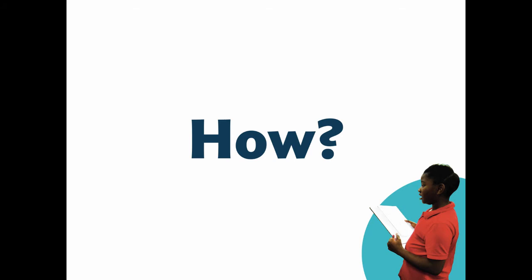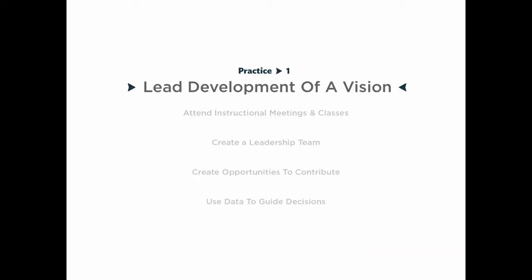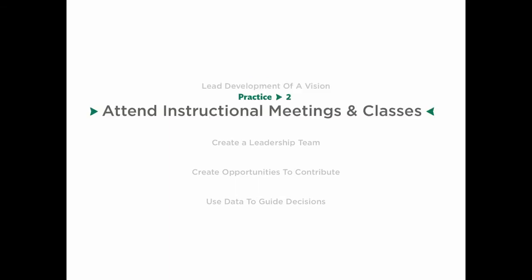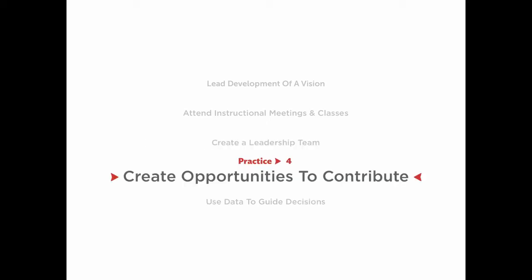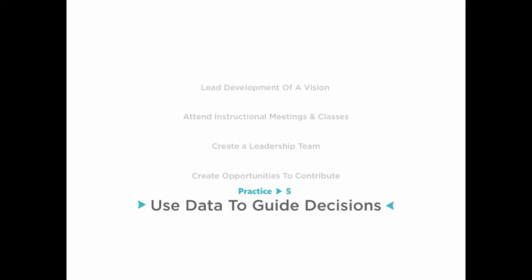So, how are we going to create or strengthen our site leadership? Let's unpack these five practices that are recommended to get started. The five practices related to Strong and Engaged Site Leadership are: the site leader leads development of a vision; the principal regularly attends instructional meetings and conducts classroom visits; create a leadership team that facilitates decisions related to school-wide systems and practices; create opportunities for all stakeholders to contribute to school decisions; and regularly use academic and behavior data to guide school decisions.